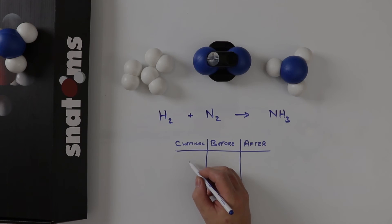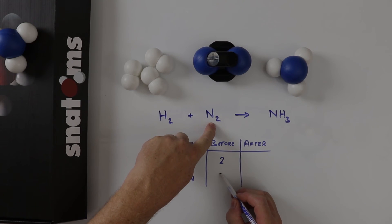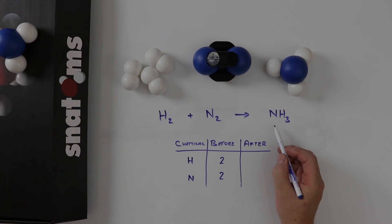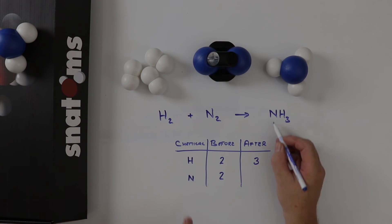Let's write down the chemicals. We have hydrogen and we have nitrogen. We have two hydrogens before and two nitrogens before. After we have three hydrogens and one nitrogen.